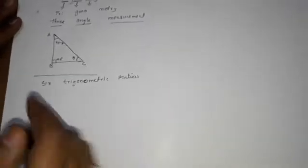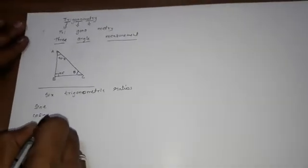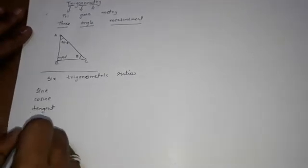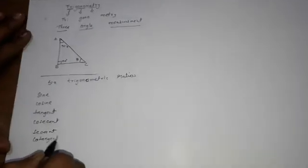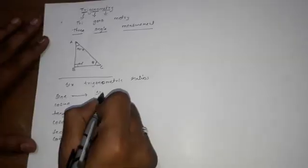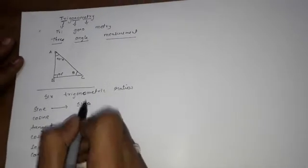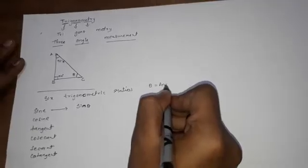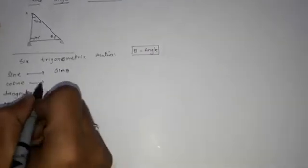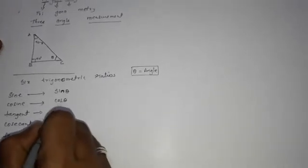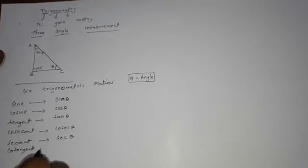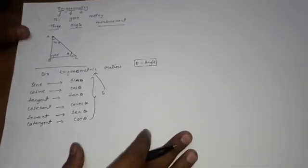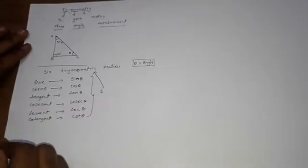Now we have six trigonometric ratios: sine, cosine, tangent, cosecant, secant, and cotangent. We write sine in short form as 'sin' but read it as sine theta, where theta is any angle. We write cosine as cos theta, tangent as tan theta, cosecant as cosec theta, secant as sec theta, and cotangent as cot theta.